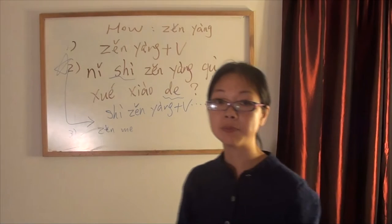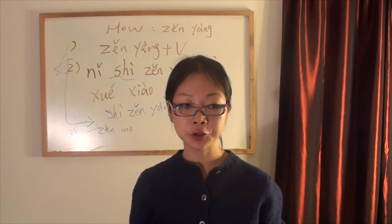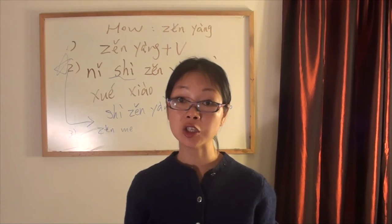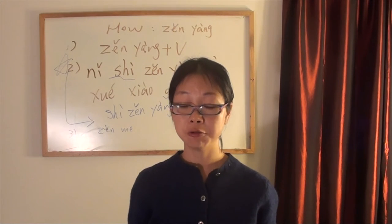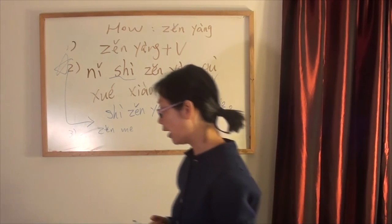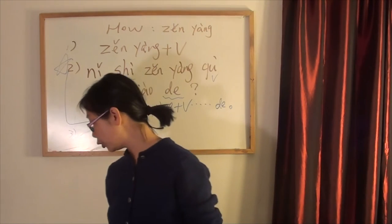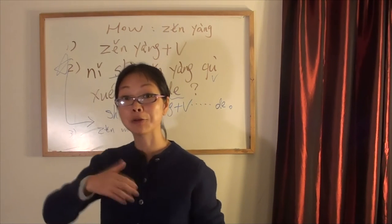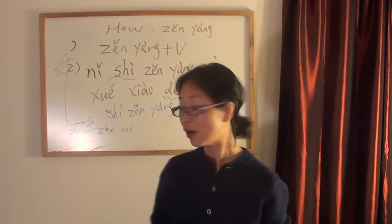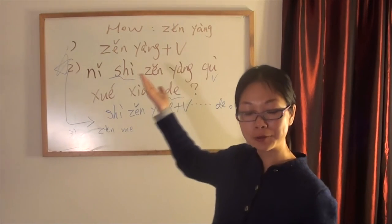There are two ways to say 'how' in Chinese: 怎样 and 怎么. They mean exactly the same thing. I want you to learn both of them, because when you're talking to Chinese speakers, you don't know which word they will use. So for example, you can say 怎样说 or 怎么说 — both are correct. How to say: 怎么说, 怎样说.